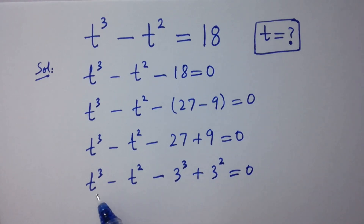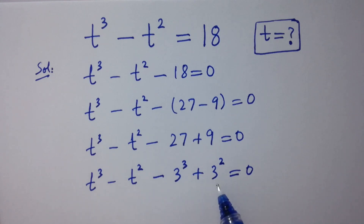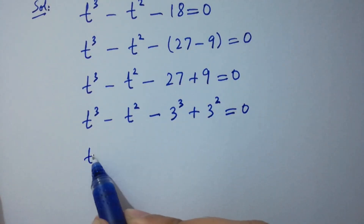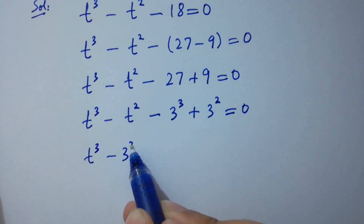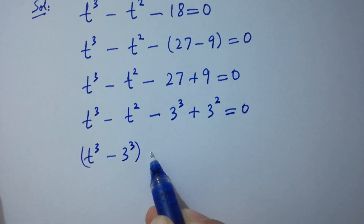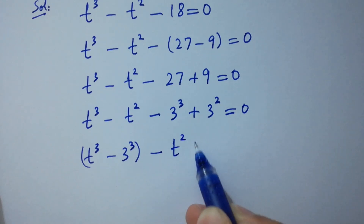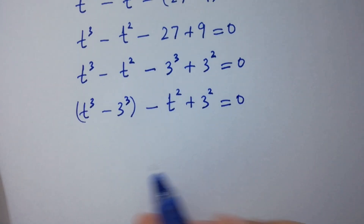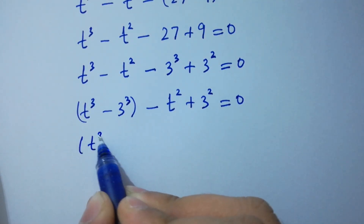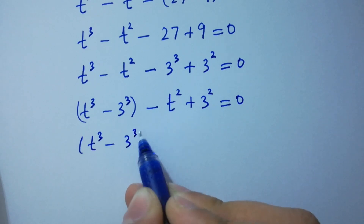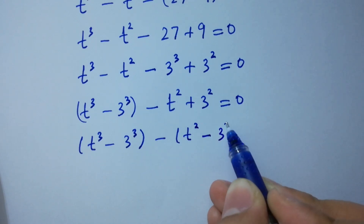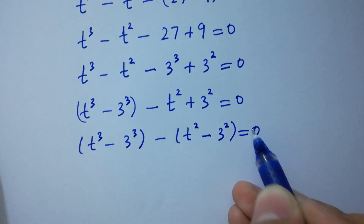By correspondence, here is t cubed and here is 3 cubed; here is t squared and here is 3 squared. So this becomes t cubed minus 3 cubed minus t squared minus 3 squared equals 0.